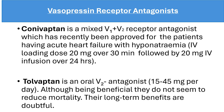Vasopressin receptor antagonists include conivaptan and tolvaptan. Conivaptan is a mixed V1 and V2 receptor antagonist recently approved for patients having acute heart failure with hyponatremia. The dose is an intravenous loading dose of 20 mg over 30 minutes followed by 20 mg IV infusion over 24 hours. Tolvaptan is for oral use and is a V2 antagonist at a dose of 15 to 45 mg per day. Although beneficial, they do not reduce mortality, so their long-term benefits are doubtful.